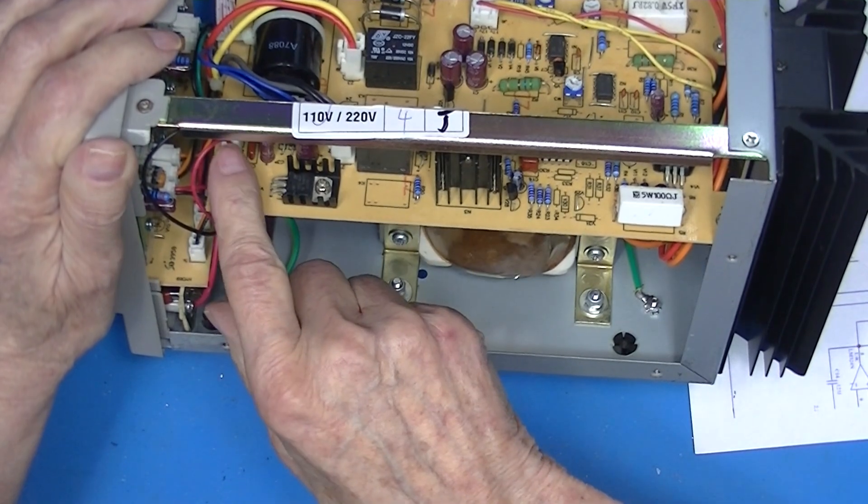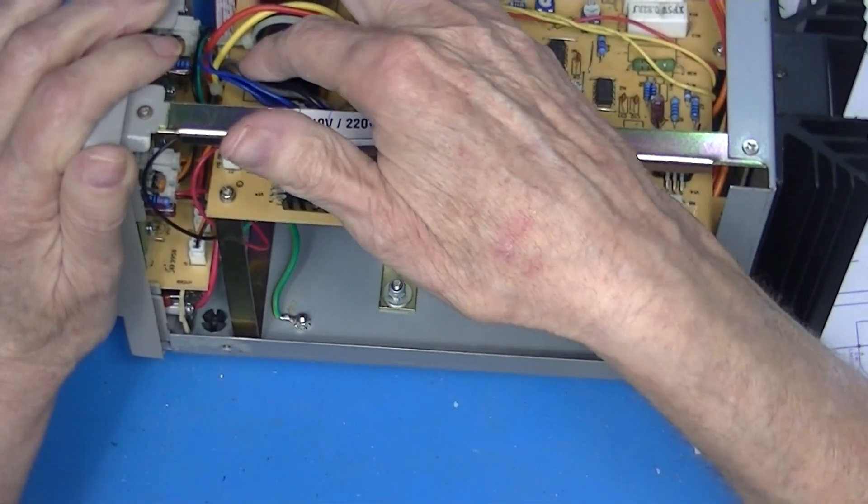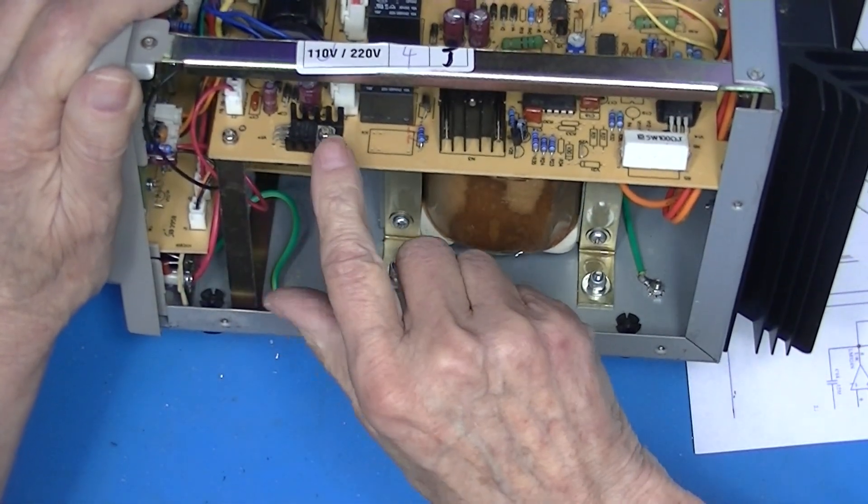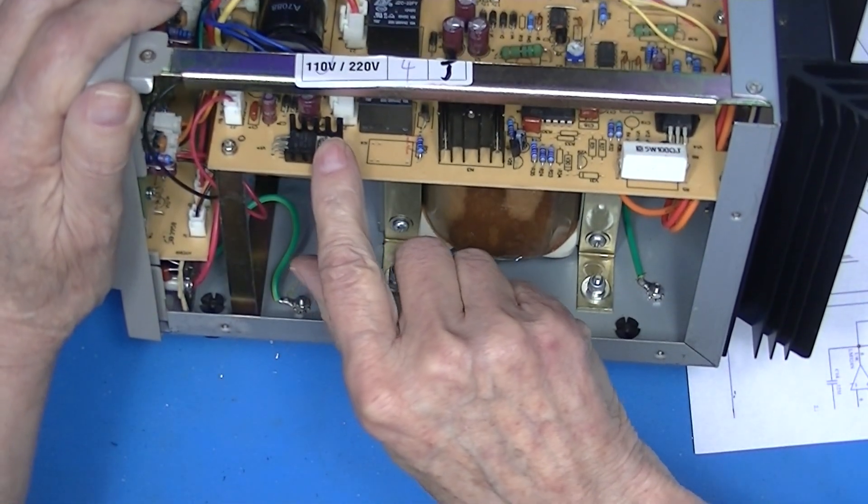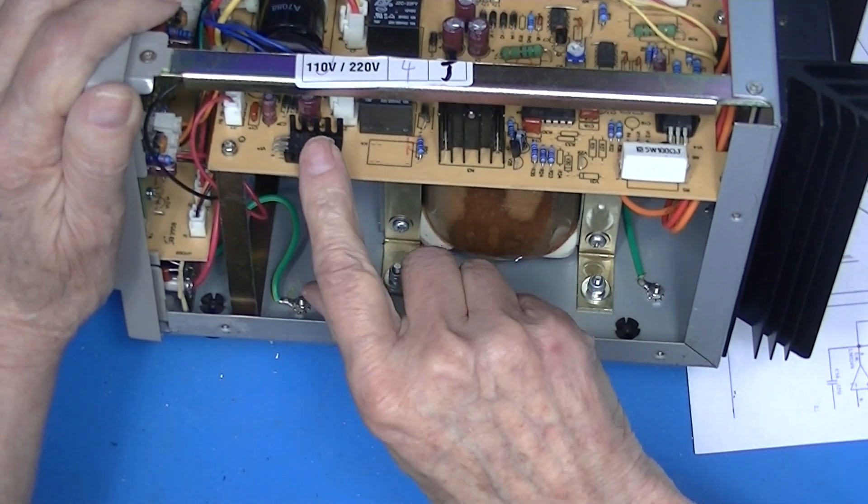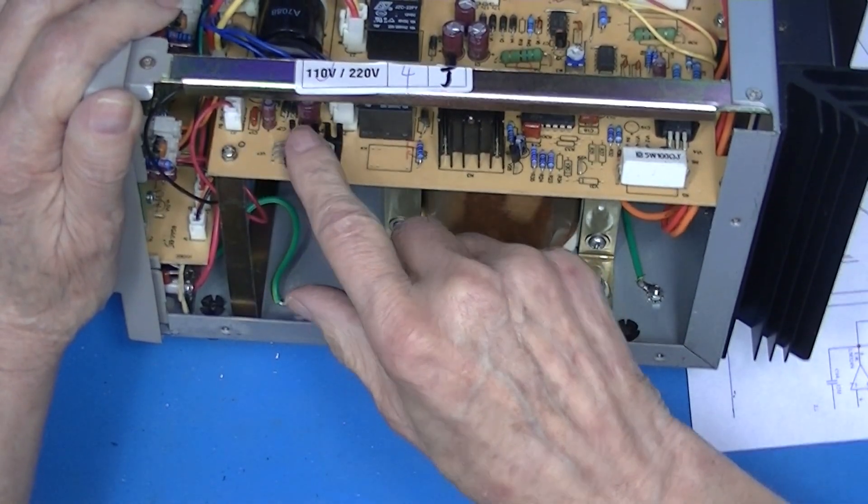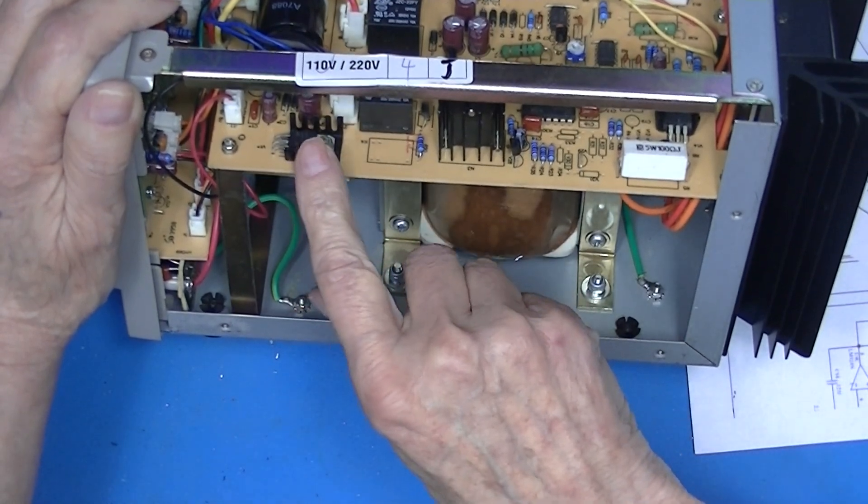So this probably develops this 5 volts here. This three terminal regulator though is a 7809, which I'm not going to trace out, but I don't quite understand it.